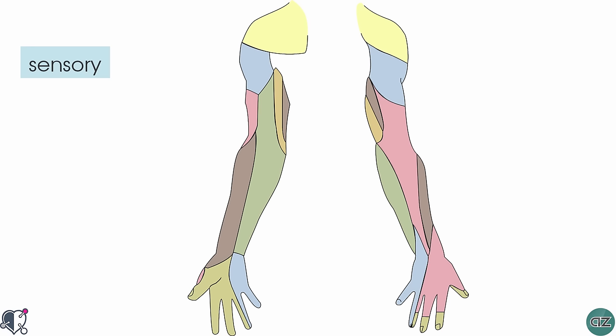In terms of sensory innervation, the median nerve gives rise to a palmar cutaneous branch which innervates the lateral part of the palm. In this diagram on the left, you can see this patch of skin on the palmar surface laterally which is innervated by the palmar cutaneous branch. You can also see that there are three and a half fingers shaded in the same green color, which are supplied by the digital branches of the median nerve.